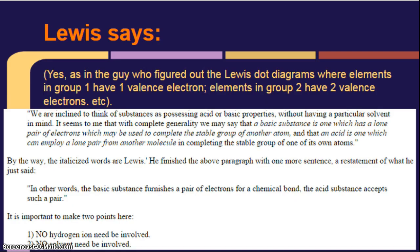Lewis. This is the same guy who figured out the Lewis dot diagrams that we did in first semester, where elements in group 1 have one valence electron, elements in group 2 have two valence electrons, etc. So, Lewis said, We are inclined to think of substances as possessing acid or base properties, without having a particular solvent in mind. It seems to me that with complete generality, we may say that a basic substance is one which has a lone pair of electrons, which may be used to complete the stable group of another atom, and that an acid is one which can employ a lone pair from another molecule in completing the stable group of one of its own atoms. By the way, the italicized words are Lewis's. He finished the above paragraph with one more sentence, a restatement of what he just said.